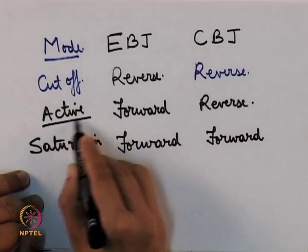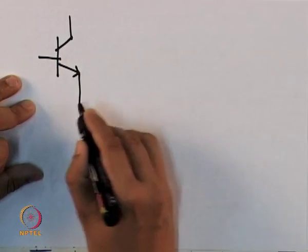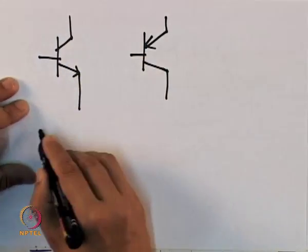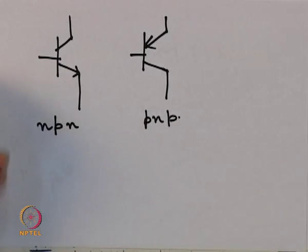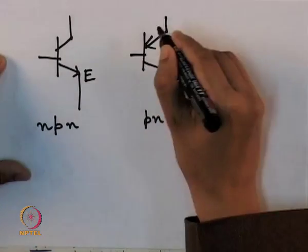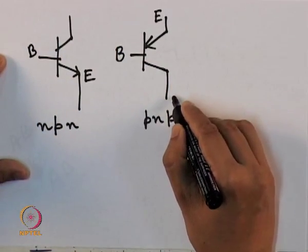For this course we shall consider only the case when the transistor is in the active region. What is the symbol for a BJT? For a BJT, depending on whether it is NPN or PNP type, this is the symbol of an NPN transistor. The terminal with the arrow is the emitter for both cases, the central terminal is the base for both cases, and the remaining one is the collector.